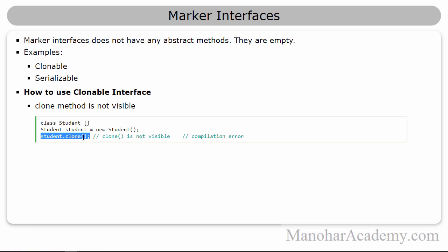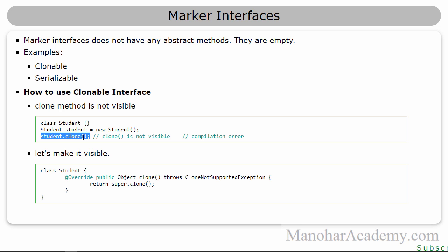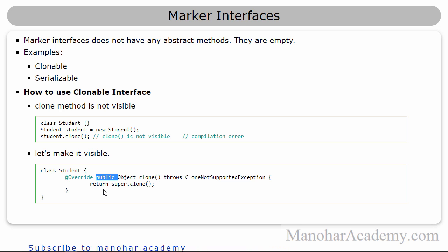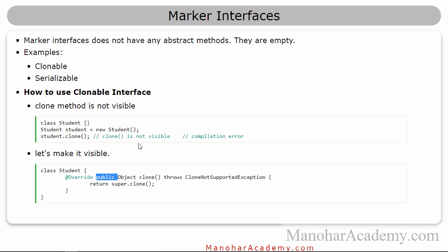So we may think — okay, let's make it visible. To do that, what we need to do is override the clone method and make it public. As we saw in the previous module when talking about inheritance, an overriding method can be more accessible or less restrictive. Clone is protected in the superclass, so we are making it public. Now it is visible, the compilation error goes away, and the code compiles.